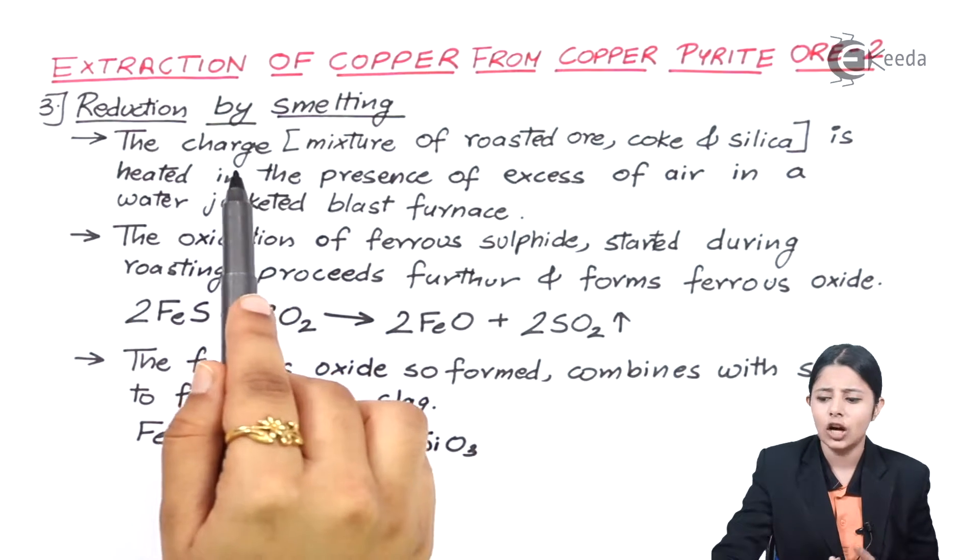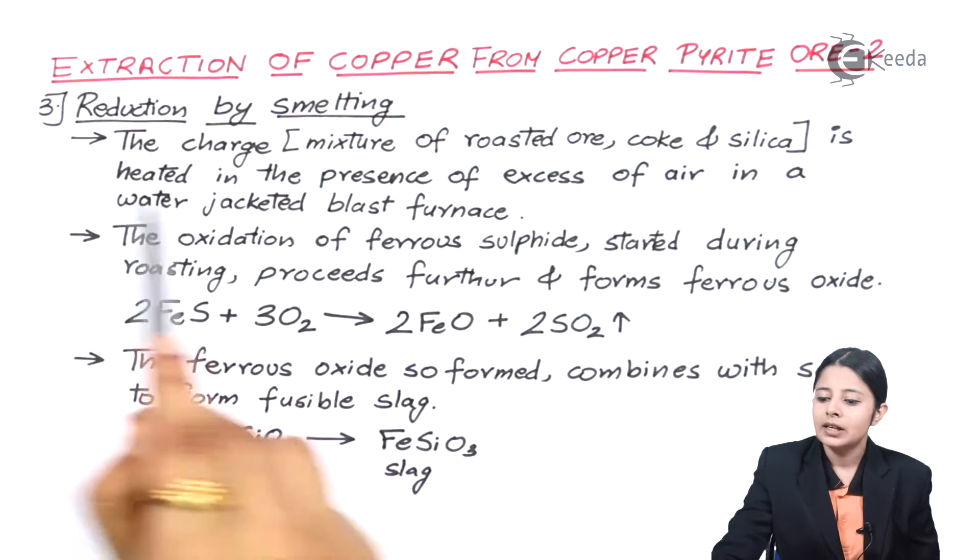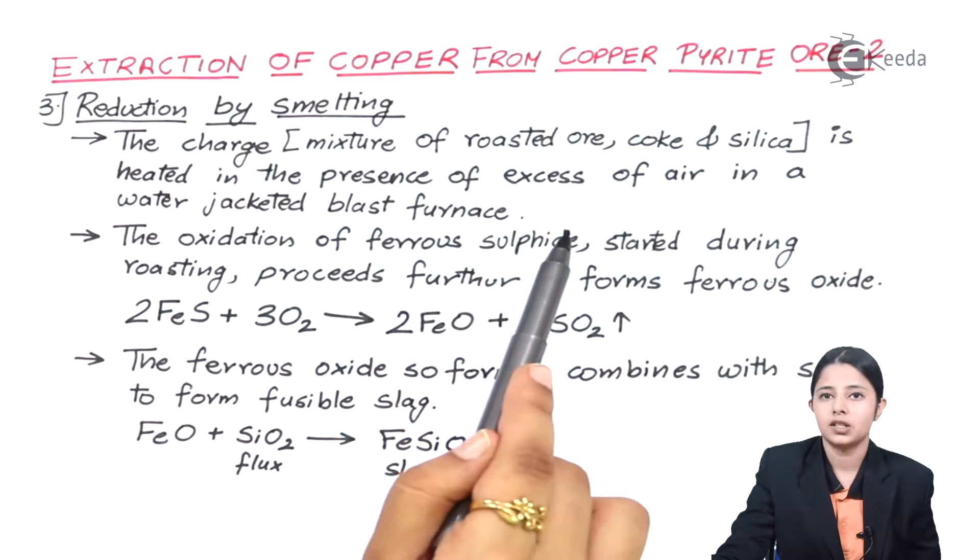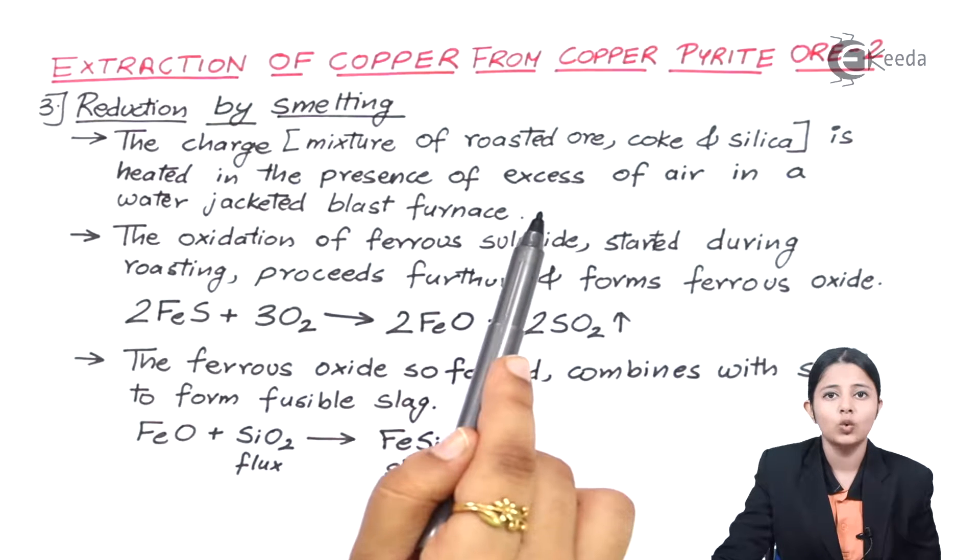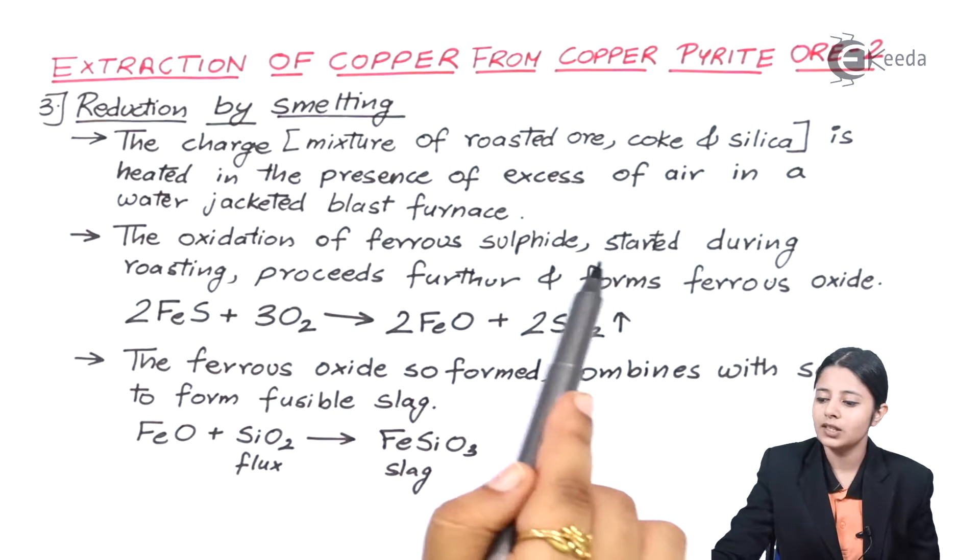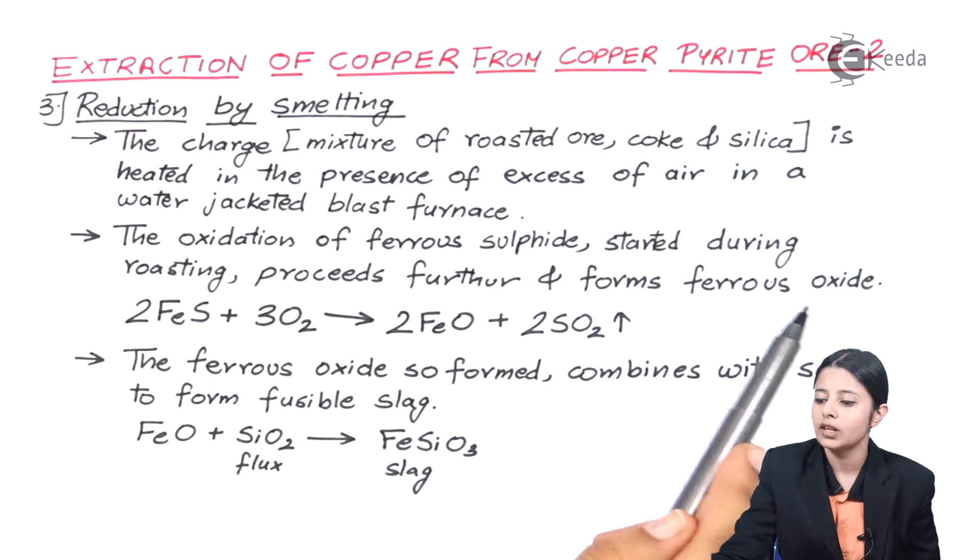The charge, what is basically charge? It is a mixture of roasted ore, coke and silica. It is heated in the presence of excess of air in a water jacket blast furnace. The oxidation of the ferrous sulphide starts during the roasting, proceeds further and forms ferrous oxide.